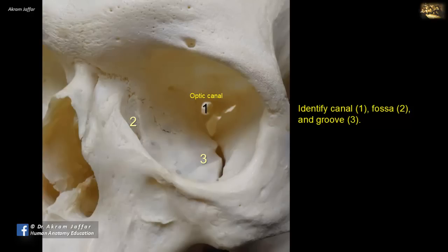Fossa 2 is located on the medial side of the orbit, and it is partly located in the lacrimal bone. Here is the lacrimal bone. It has an anterior lacrimal crest, and this fossa is the fossa for the lacrimal sac.